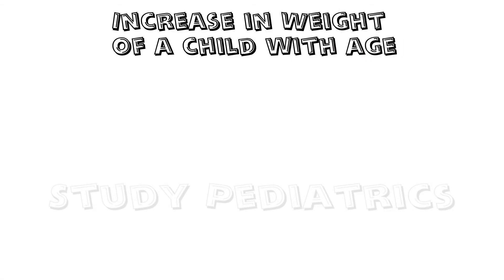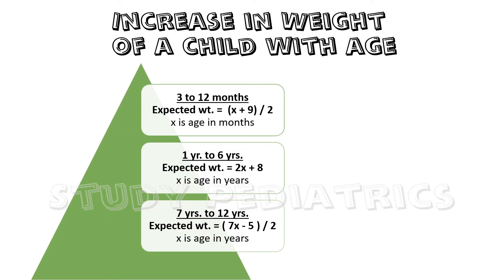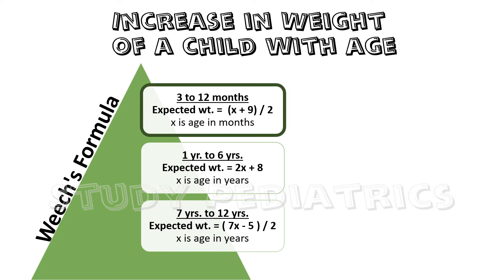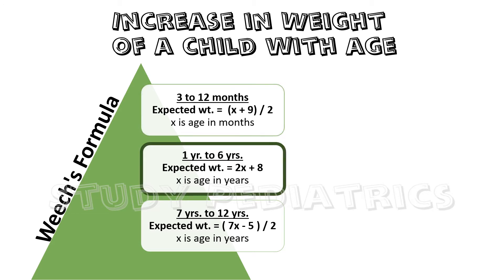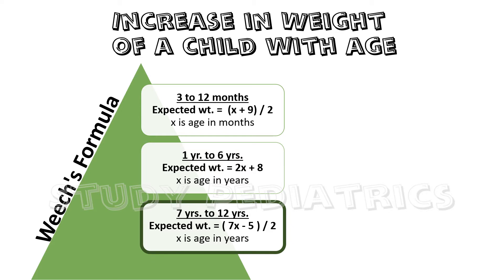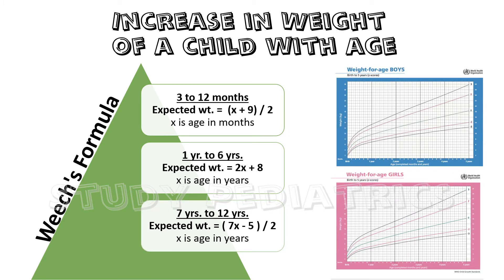Now let's see some formulas based on the relationship of weight with respect to age. With the help of these formulas, we can derive the approximate ideal weight of a child at a particular age. These are called Wheat's formulas. For a child aged 3 to 12 months, expected weight = (x + 9) / 2, where x is age in months. For age 1 to 6 years, expected weight = 2x + 8, where x is in years. For age 7 to 12 years, expected weight = (7x − 5) / 2, where x is in years. You can check these formulas against WHO growth charts and find the values almost overlapping.